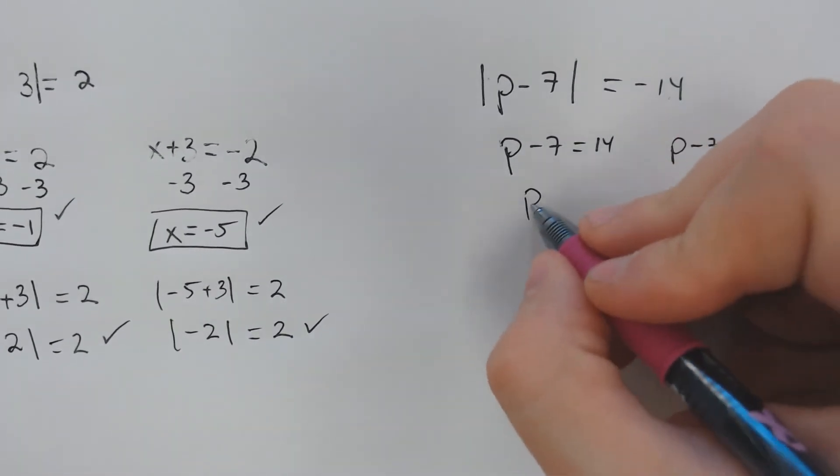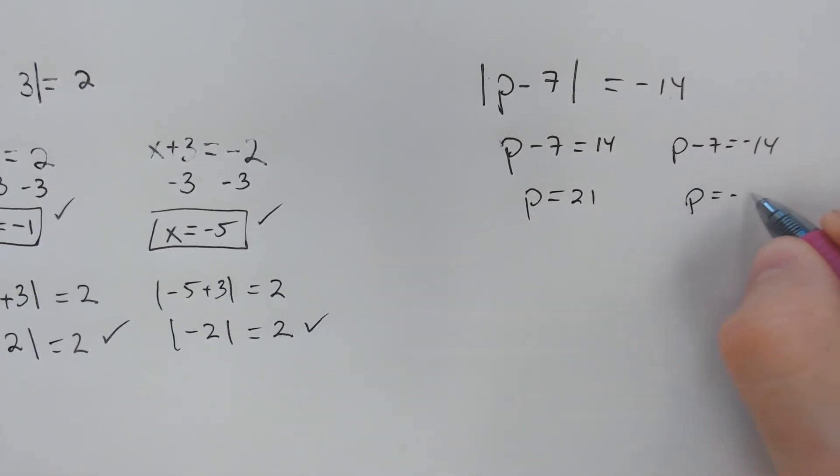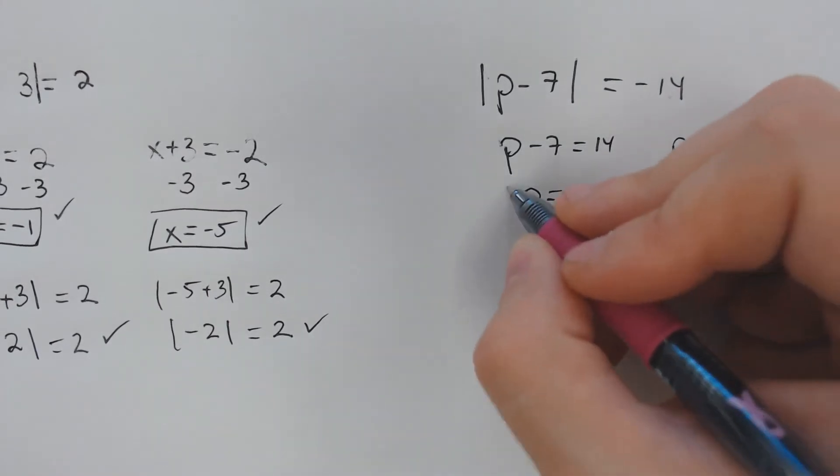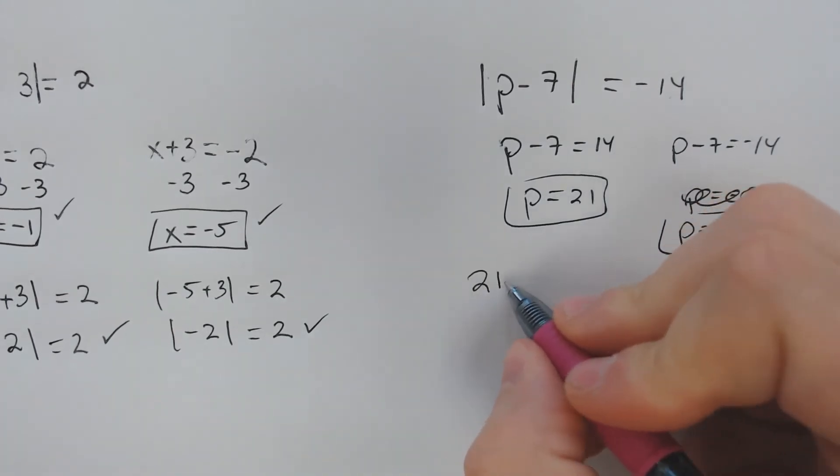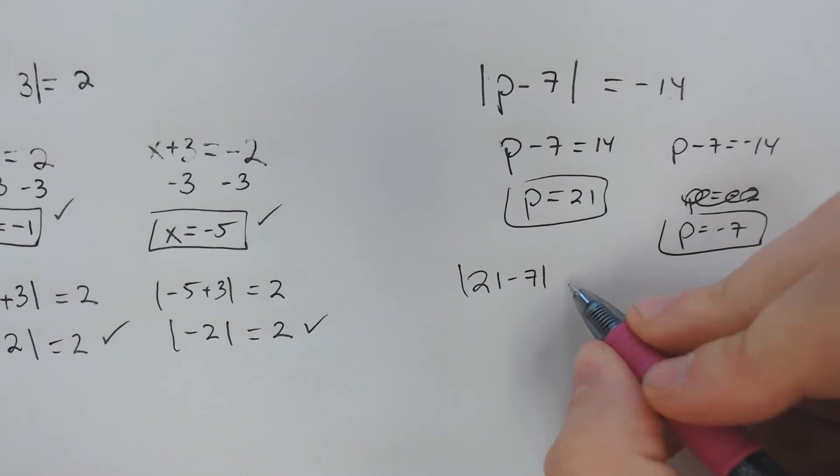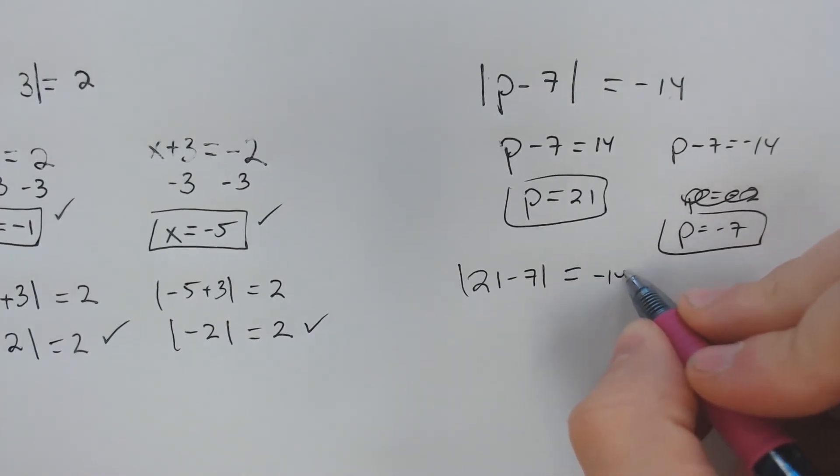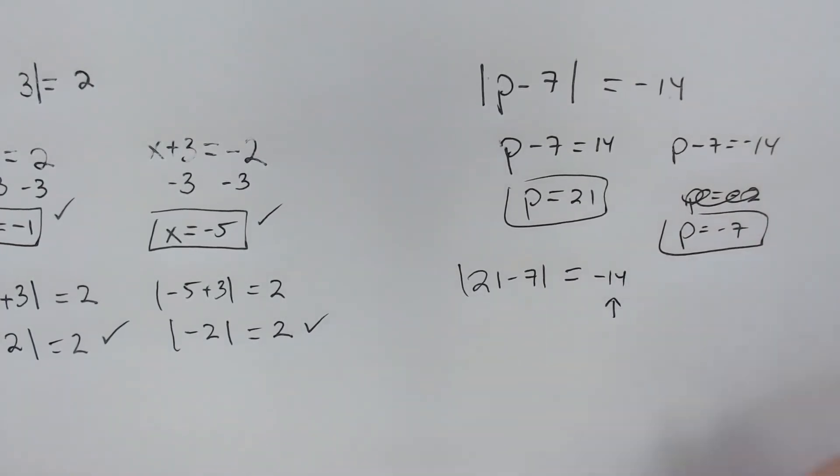Even if you were to solve this the right way, where you set p minus 7 equal to 14 and p minus 7 equal to negative 14, one positive, one negative, when you get your two answers, p equals 21 and p equals negative 7, if you plug those in, that's what we call an extraneous solution. It just doesn't work.